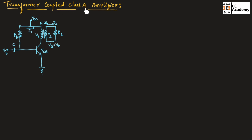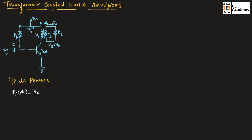Now let us understand the transformer coupled class A power amplifier. Instead of using the resistor RC, a transformer is used to design the class A power amplifier — that is why it is known as transformer coupled class A power amplifier. Here N1 is the number of turns in the primary coil, N2 is the number of turns in the secondary coil, V1 is the voltage applied to the primary side, V2 is the secondary voltage, I1 is the primary current, and I2 is the secondary current. Here V2 equals the output voltage V0. The input DC power is P_IDC = VCC × ICQ, the same expression as in the series-fed class A power amplifier.